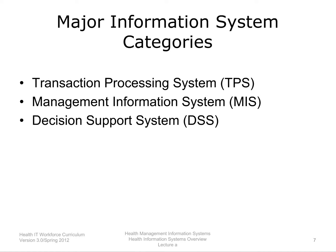With regards to information systems, there are three major categories. They are Transaction Processing System, TPS; Management Information System, MIS; and Decision Support System, DSS. Each will be defined in the next few slides.